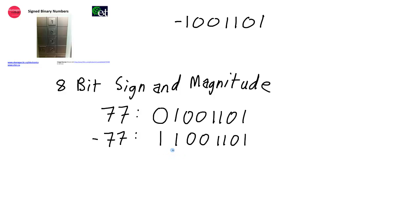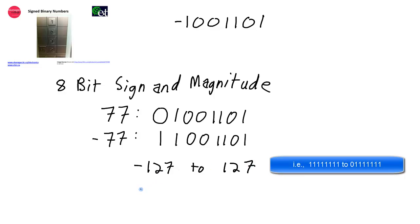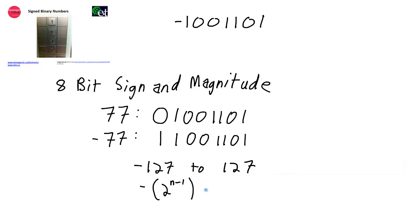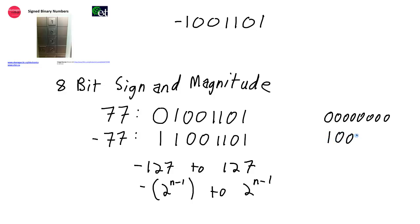Since we're using 1 bit for the sign, we only have 7 bits left for the magnitude. For the 8-bit sign and magnitude system, we can represent numbers from negative 127 up to 127. In general, we can represent numbers from negative 2 to the n minus 1 up to 2 to the n minus 1, where n is the number of bits. One final thing to note is that the number 0 can be represented as eight 0 bits, but it can also be represented as seven 0 bits with a 1 as the most significant bit — giving us both 0 and negative 0.